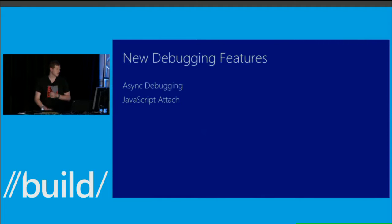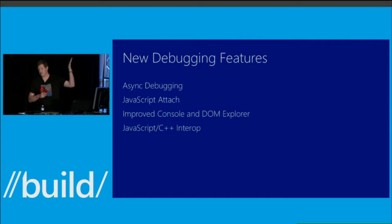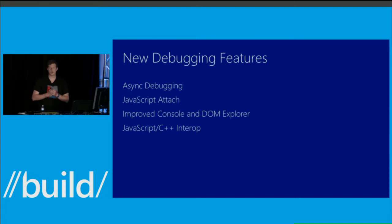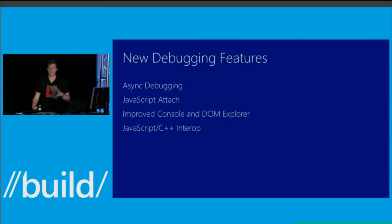The new debugging features I'm going to hit on: async debugging — we saw that in the keynote yesterday. If you've ever debugged promises or any asynchronous operations in JavaScript before, you know that your call stack can be a pain. I have no idea how I got here when I break. So we've improved that. Maybe you kicked off an asynchronous operation and you have no idea if it's completed — we help with that. JavaScript attach — you can finally attach to JavaScript, no more relaunching your application when you have a problem. Some improvements to the console and DOM Explorer windows. And JavaScript C++ interop — we've enabled the ability to debug JavaScript and C++ at the same time without using two copies of Visual Studio against the same process.